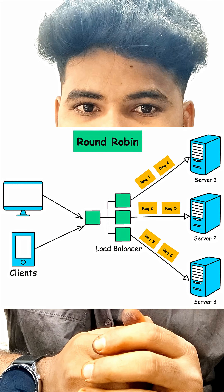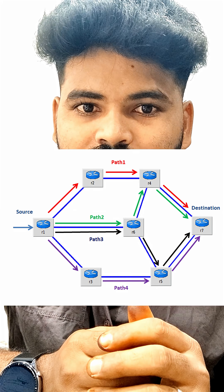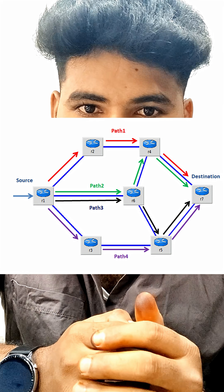The application load balancer uses a round-robin mechanism to distribute traffic. The network load balancer uses a flow hash algorithm to distribute traffic across multiple targets. Application load balancer supports path and host-based routing, whereas the network load balancer is designed for ultra high performance and low latency.